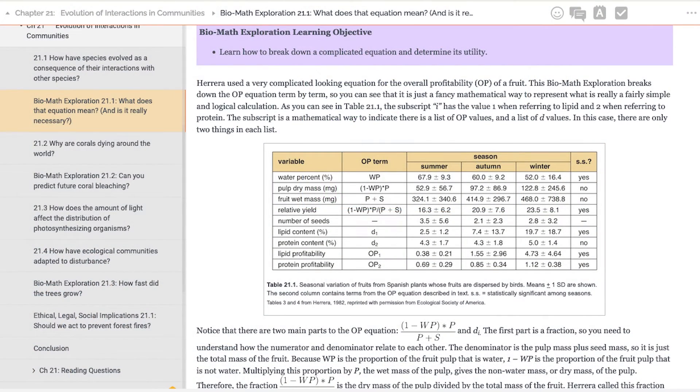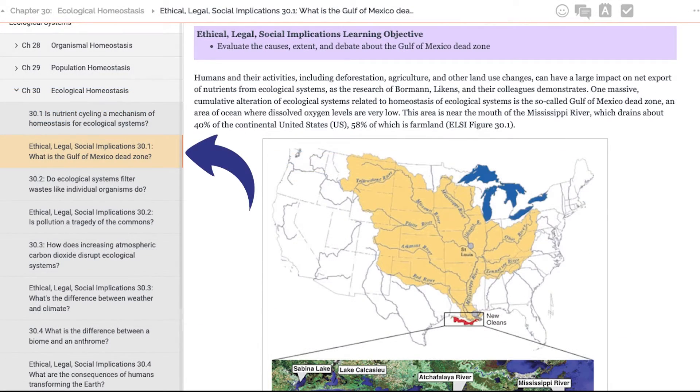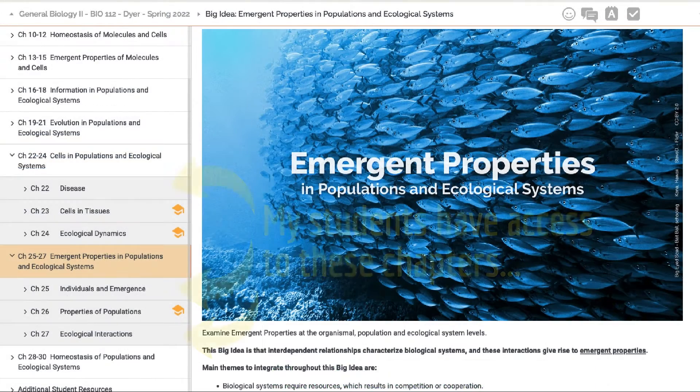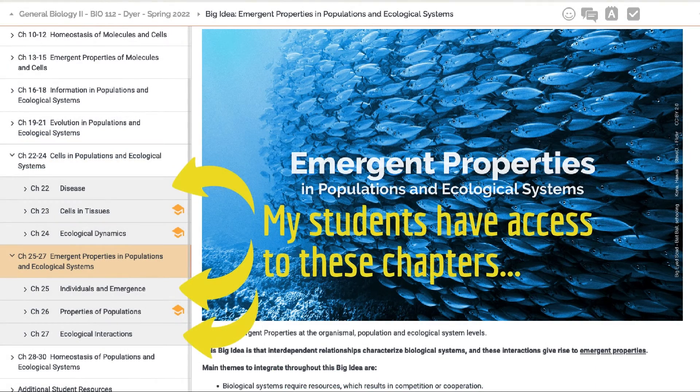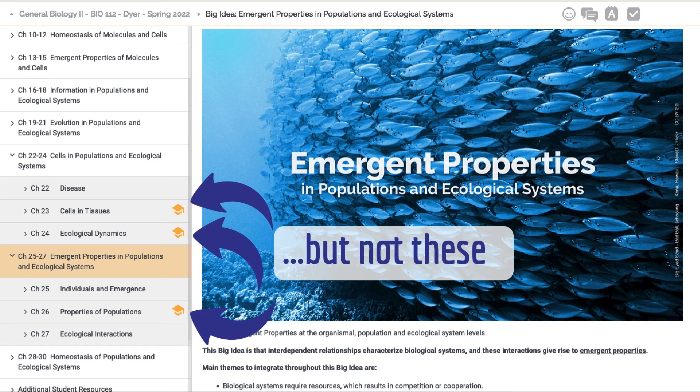In addition to the five core concepts of biology, ICB also includes Biomath chapter sections that help build students' quantitative reasoning skills, as well as ethical, legal, and social implication chapter sections. And since it's an ebook, I can choose which chapters I'll use in a semester, and students only need to pay for access to those chapters.